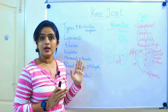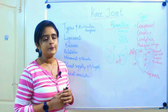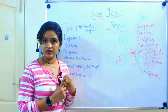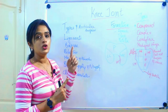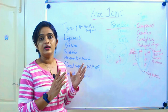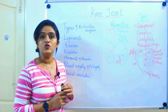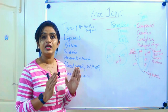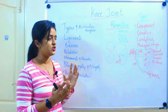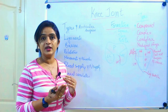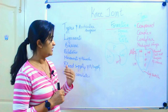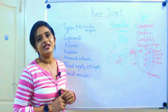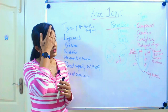Let's move on to the knee joint. Whenever you study a joint, there are important subheadings: the type of joint, the articular surfaces of participating bones, the ligaments stabilizing that joint, the bursae seen in relation to the joint, important landmarks and relations, the movements possible and muscles involved, and finally blood supply, nerve supply, and clinical conditions.